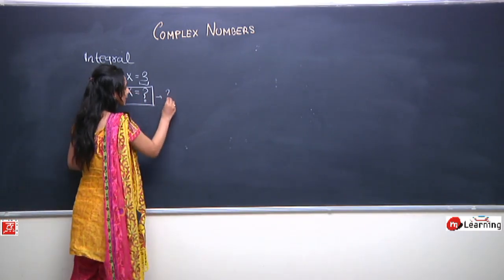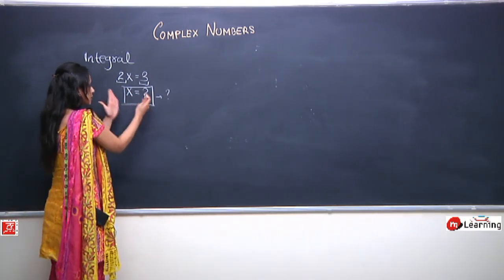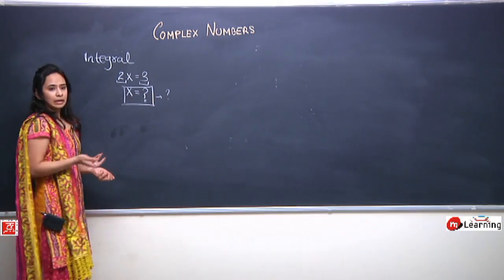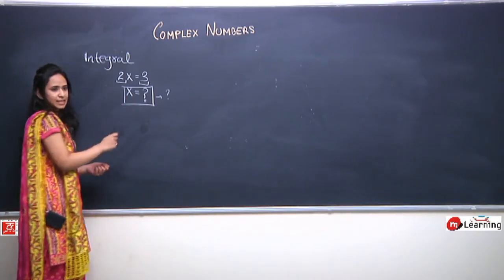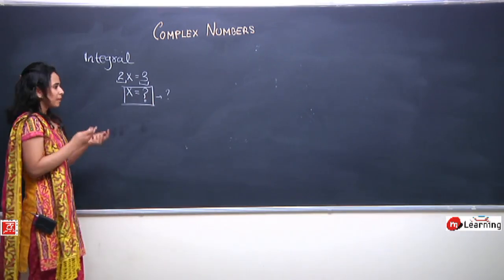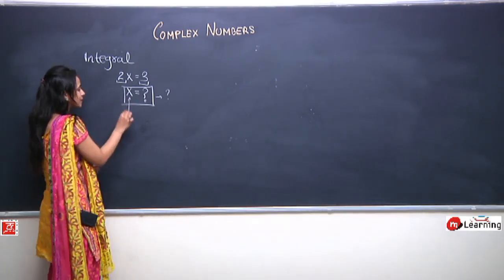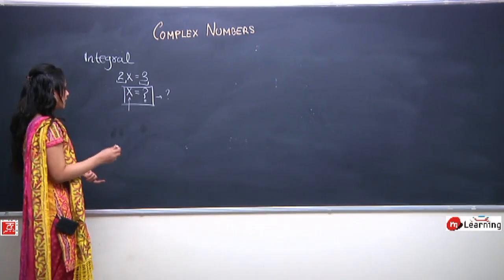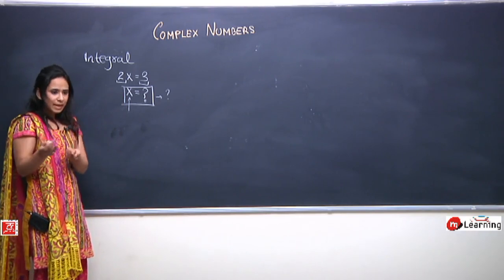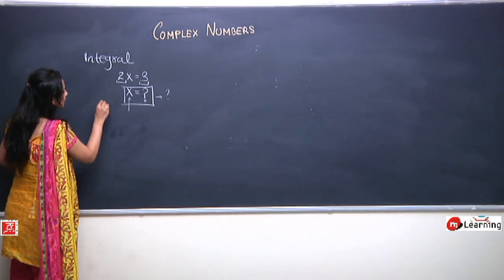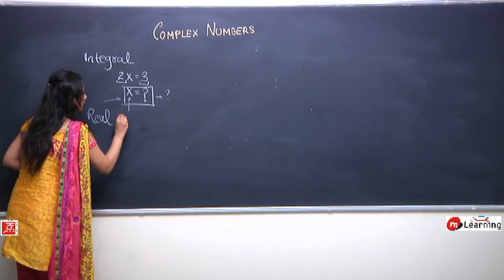But the question is, is there a need to develop a new number system to get the value of x? Is it necessary that this equation should have a solution? If x represents the number of soldiers, then x = 3/2 does not make sense because the number of persons must always be an integer. Contrary, if x represents a length in inches or meters, then this equation may possess a solution because 3/2 makes sense. So in order for this equation to possess a solution, we developed a new number system known as real numbers.